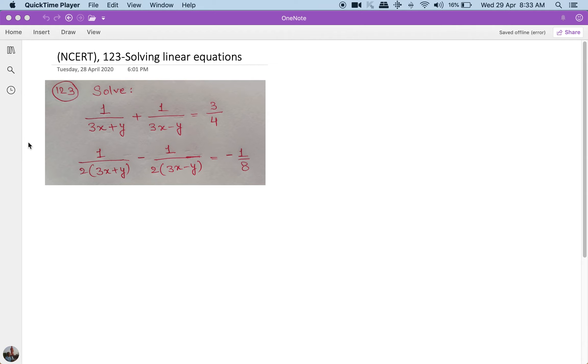1 upon 3x plus y is there in both sides, so I will have 1 upon 3x plus y as A. And 1 upon 3x minus y is also on both sides, so I will have that as B. The moment I do that, this equation becomes...